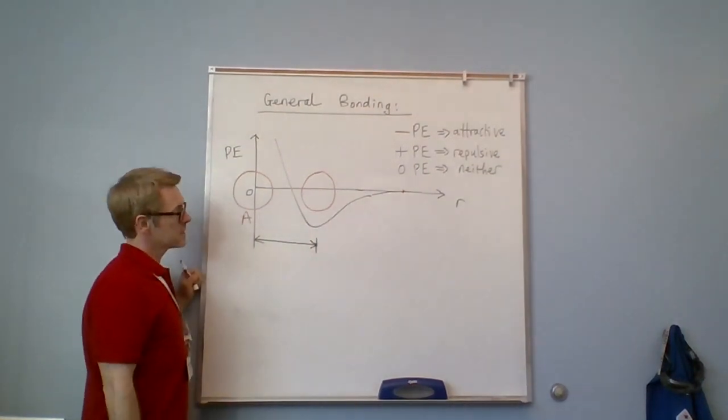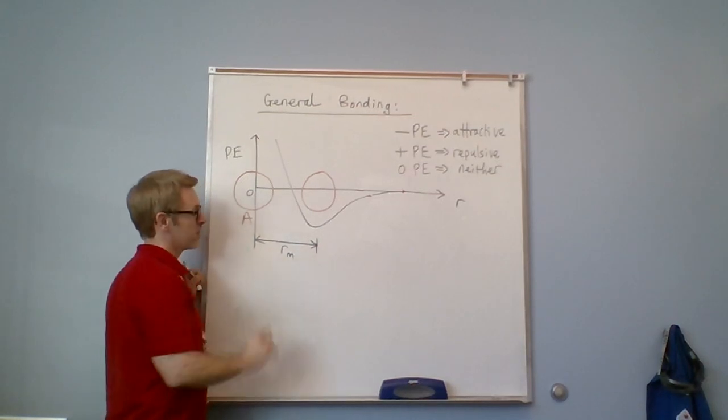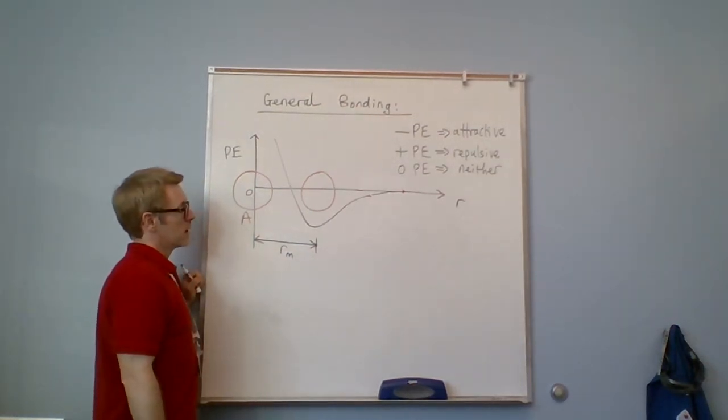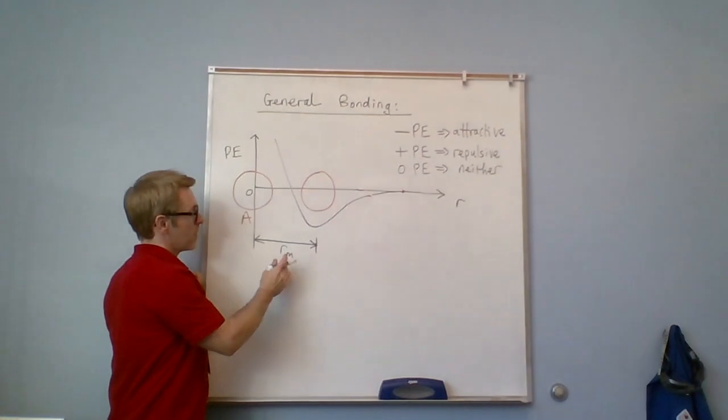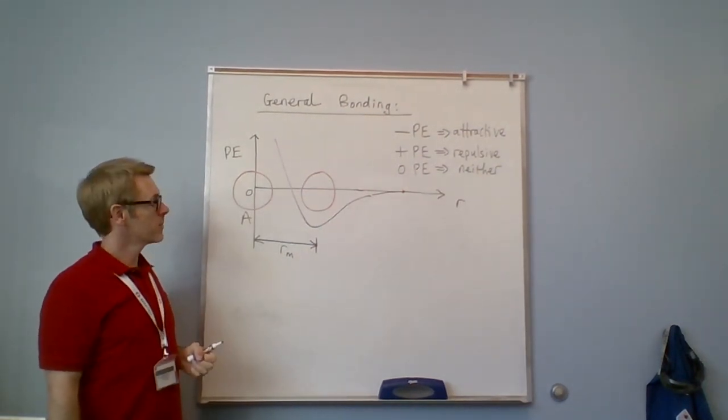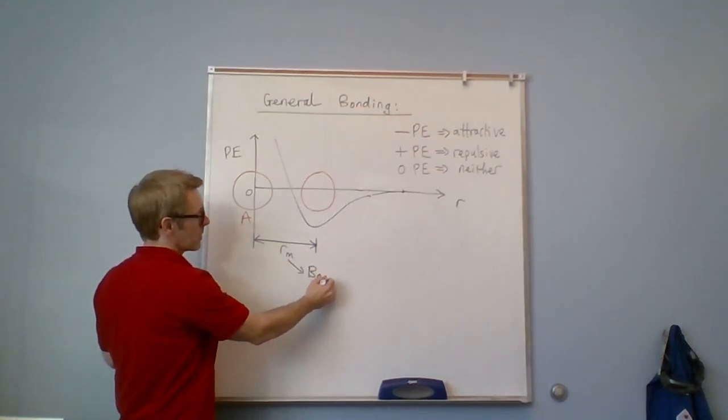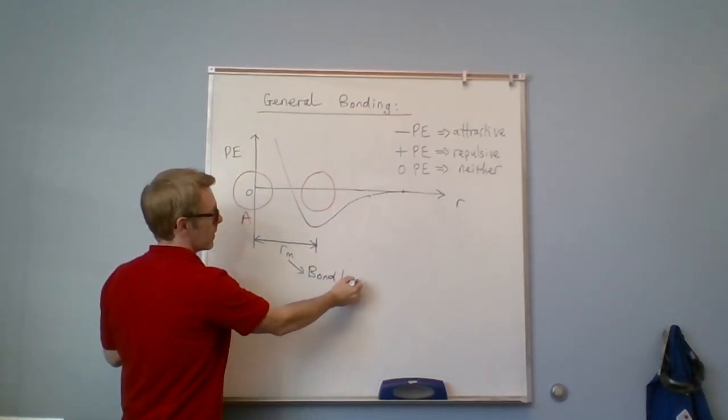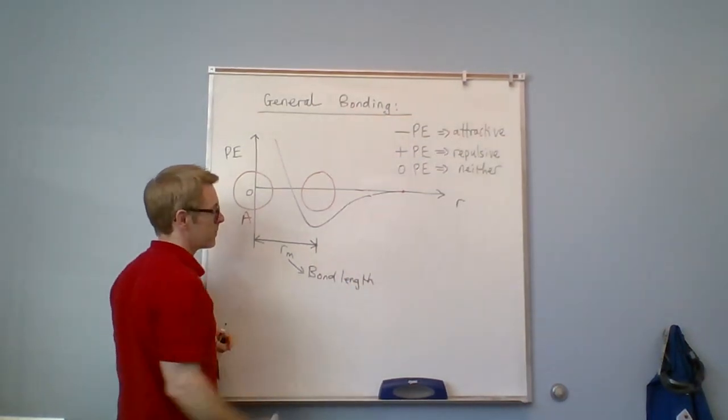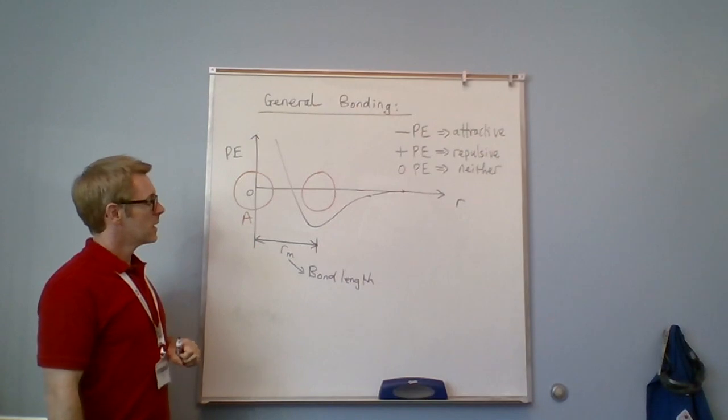Wherever that distance is here, let's call it r_m. Then that distance leads to the maximum attraction, so this will manifest to be the bond length, whether it be an ionic bond or a covalent bond.